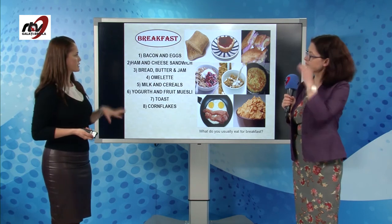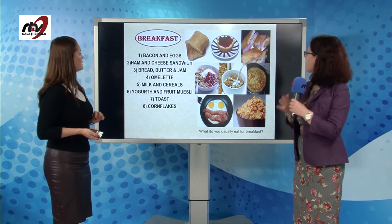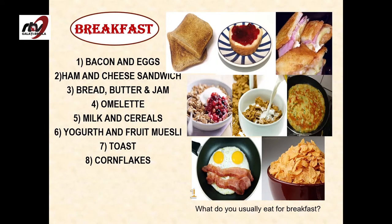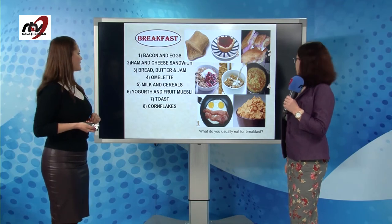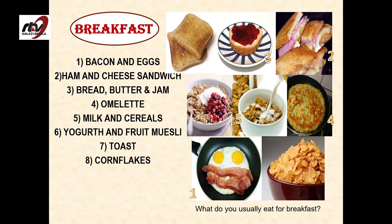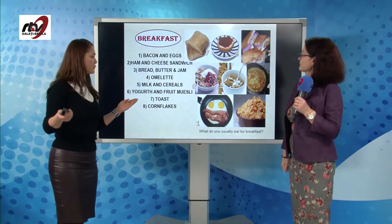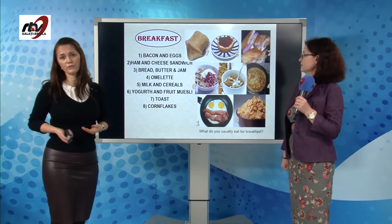Breakfast. What do we eat for breakfast? Look at the pictures and spot bacon and eggs. What about ham and cheese sandwich? That's number two. Number three: bread, butter and jam. Number four: an omelette. Milk and cereals, cornflakes. Yogurt and fruit muesli. Toast and cornflakes. What do you usually eat for breakfast? I, for example, prefer omelette. What about you?